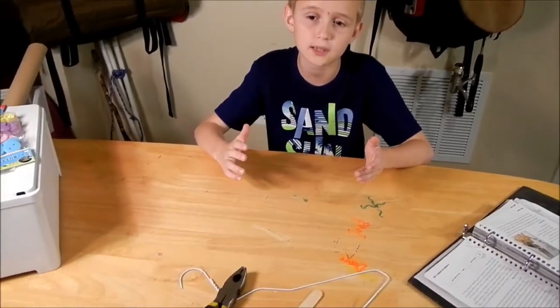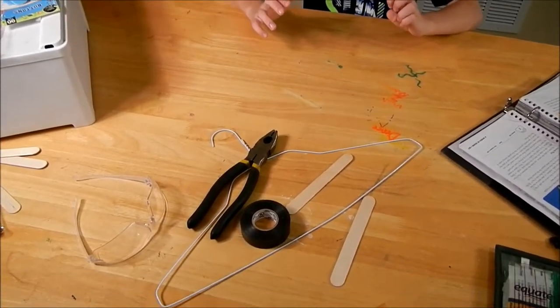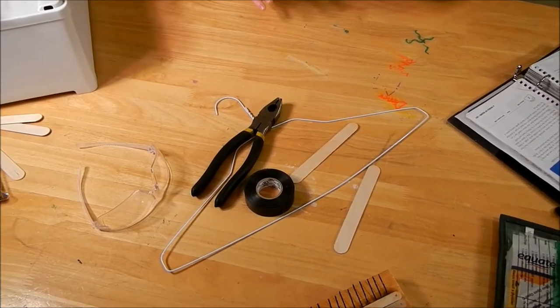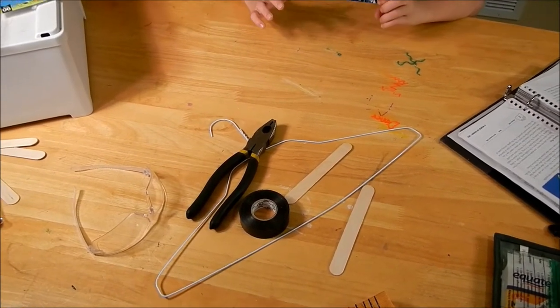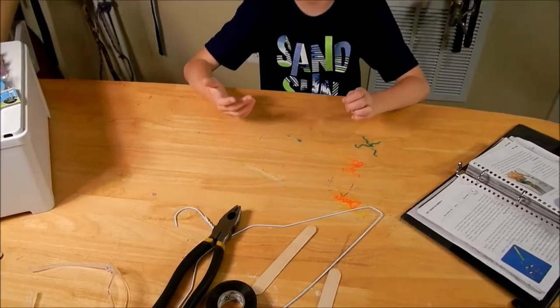The materials we need to build it are a wire coat hanger, electrical tape, two craft sticks, wire fishing line, buttons, washers with holes through them, and wire cutters. So let's start building.